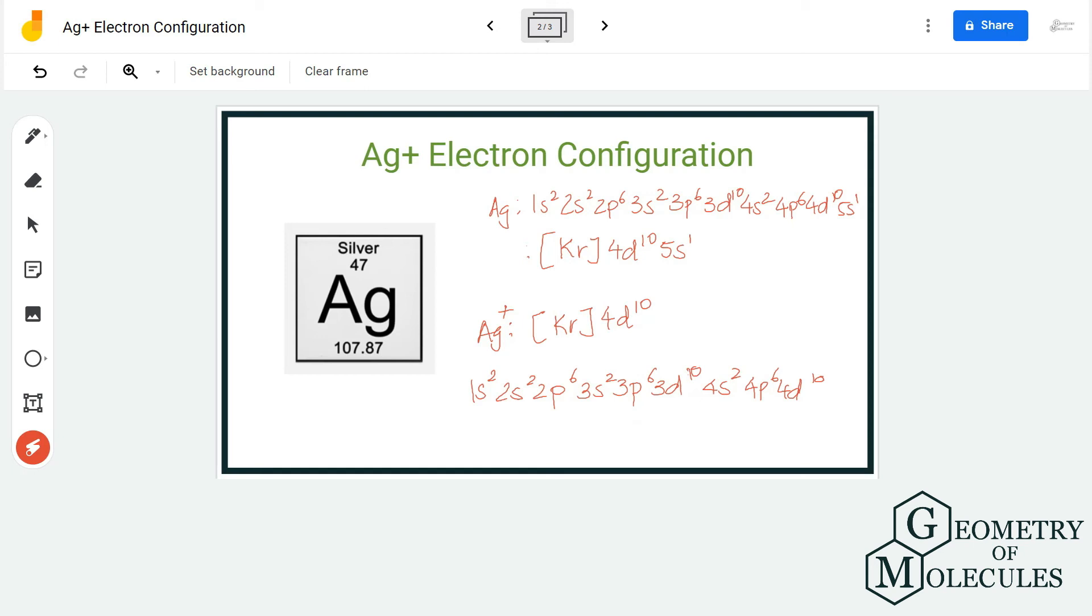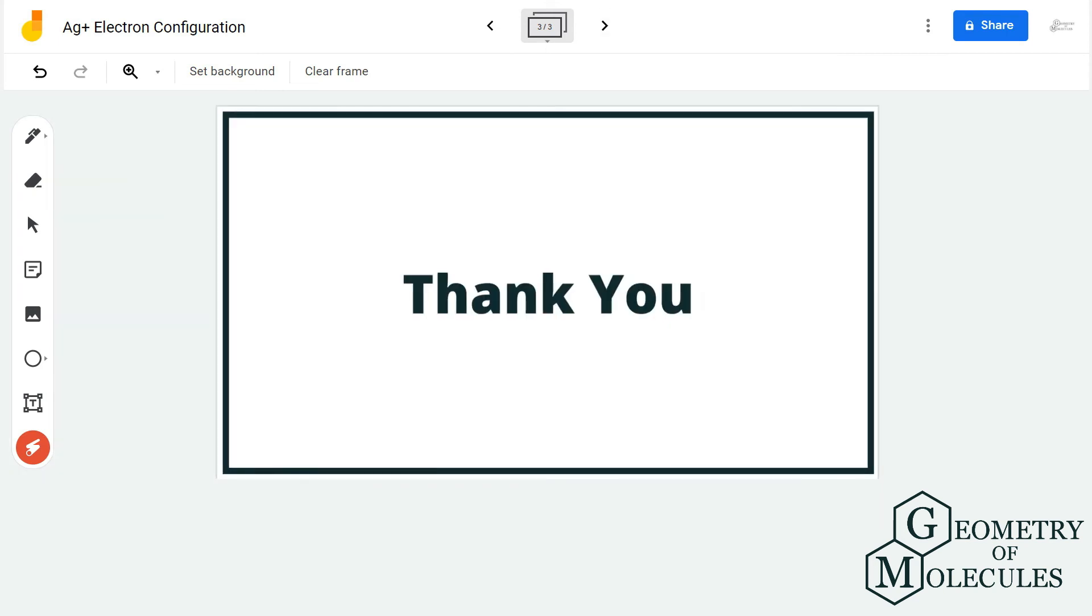People write it the other way because it is easier to write and even easier to remember. This is the electron configuration of Ag+, and I hope this video helps you understand how to find out the electron configuration of other elements.